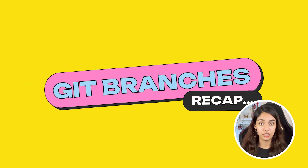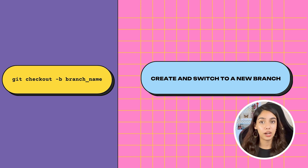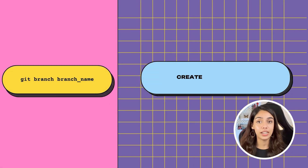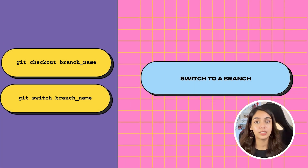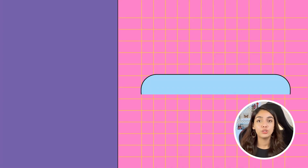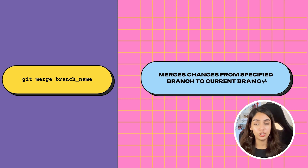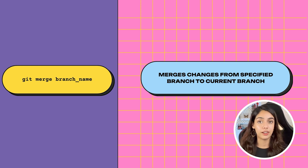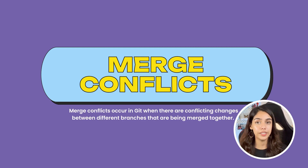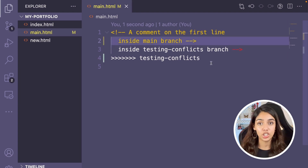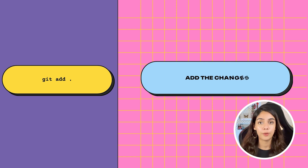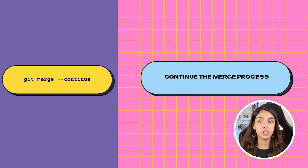Here's a quick recap on branches. To create a branch and switch to it, use the command git checkout -b and your branch name. To simply create a branch without switching into it, use git branch branch-name. To switch to an existing branch, use git checkout branch-name or git switch branch-name. To merge a branch into another, first checkout into the target branch, then run git merge and the name of the source branch. Sometimes while merging you might come across merge conflicts denoted by markers. To resolve them, remove the markers, select the changes you want, then run git merge --continue to create the merge commit.